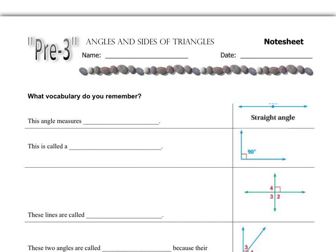Before we start chapter 3, we just want to review some of the information that we know from the past. Angles, sides of triangles, and types of triangles are what we're going to talk about today. So first, what kind of vocabulary do we remember?